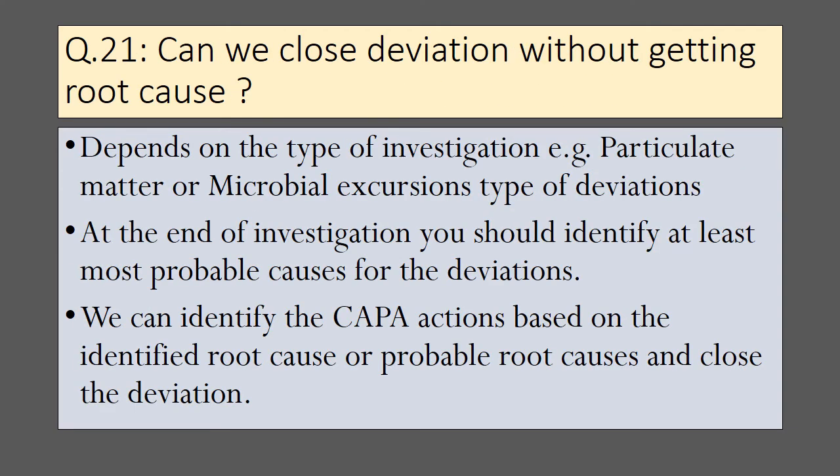Can we close a deviation without getting a root cause? The answer depends on the type of investigation. For example, in particulate matter or microbial excursion type deviations, it is very difficult to get an exact root cause. At the end of investigation, you should identify at least the most probable causes for the deviation. CAPA actions can be identified based on identified root causes or probable root causes, and the deviation can then be closed.